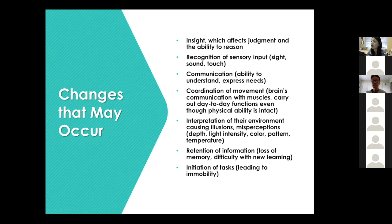Coordination of movement. The brain is our communication muscle, and they carry our day-to-day functions, even though the physical ability is intact. So patients that have dementia will often not be able to sit without suddenly thudding into that chair. They've lost that ability to control their movements, to build themselves up. And they may be as strong as they ever have been before, but they may not know how to control them anymore. Interpretation of their environment, causing illusions, misinterpretation. So that's again, that depth and light intensity, colors, patterns, and temperatures are often affected with that kind of memory loss.